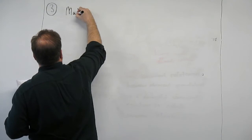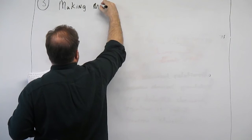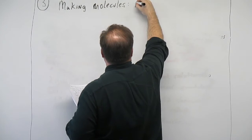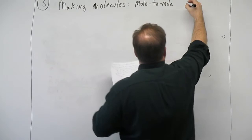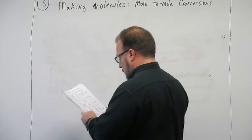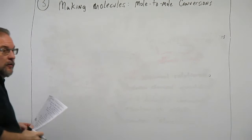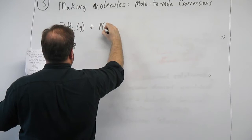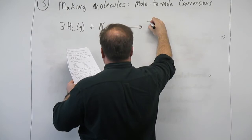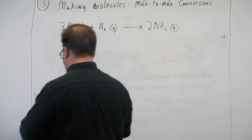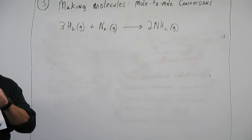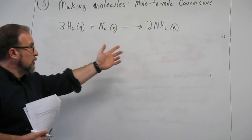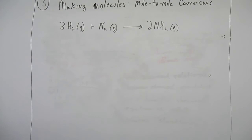This subsection is about making molecules and dealing with mole-to-mole conversions. Let's write down another chemical equation: 3H2 (gas) plus N2 (gas) produces 2NH3 (gas). That's a synthesis reaction — also called a combination reaction — where A and B produce AB. But you always have these ratios: the coefficients are 3, 1, and 2, and the ratios are always maintained.